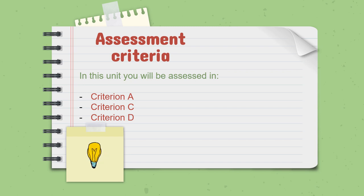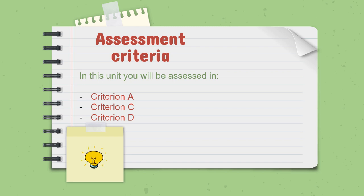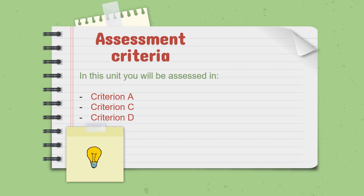As for the assessment criteria, in this unit you will be assessed in three different criterions. Criterion A, which is your E1 exam, is going to be the final — it will include all the lessons from the semester and it's going to be paper and pen. Criterion C is about evaluating and processing ideas; we're going to do a summative and formative for this criterion. Criterion D is reflecting on the impact of science; we're going to relate this topic to the life around us and do a formative and summative. Criterion D is also going to be part of our unit project.